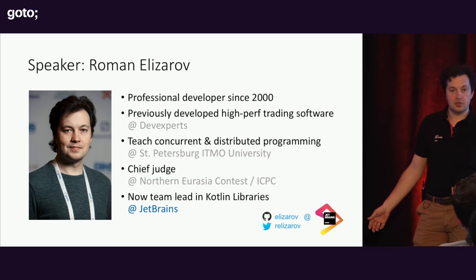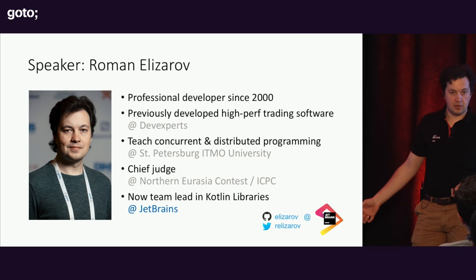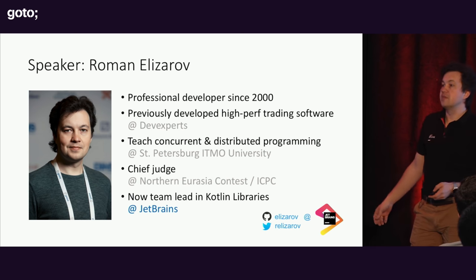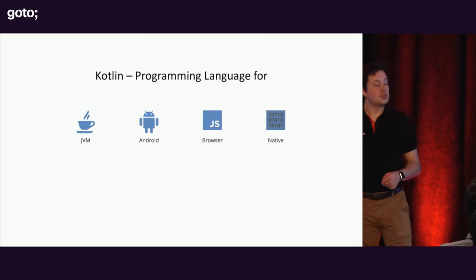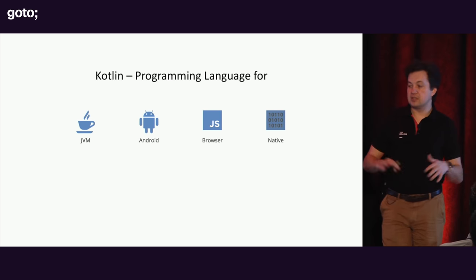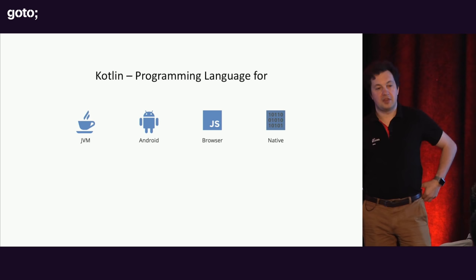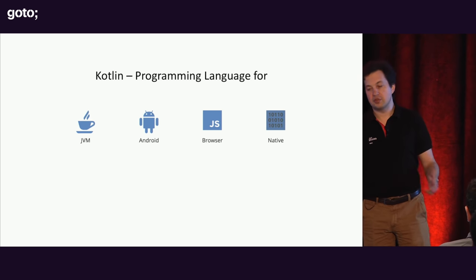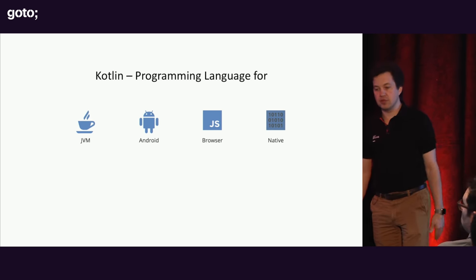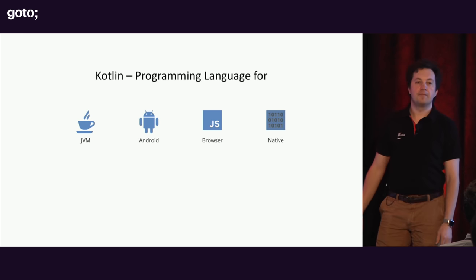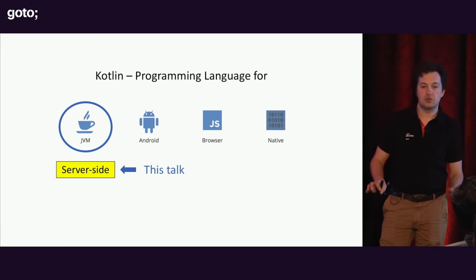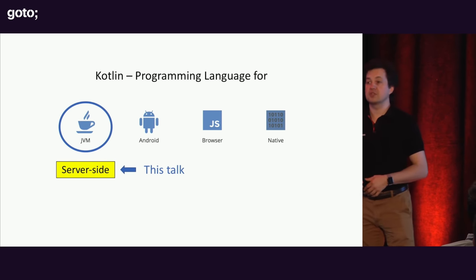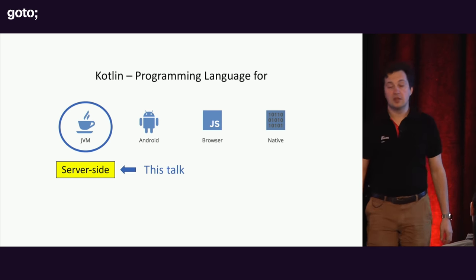Kotlin is a general-purpose programming language for lots of things — you can program on the JVM, Android, for the browser, or native. I'm not going to talk about all of that; this talk is mostly focused on server-side Kotlin applications.